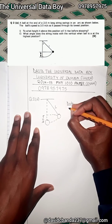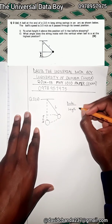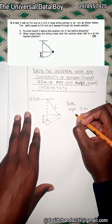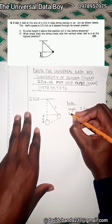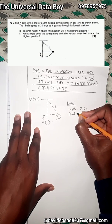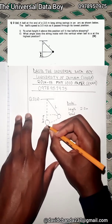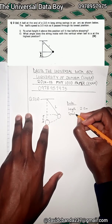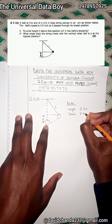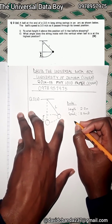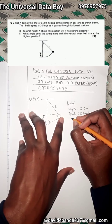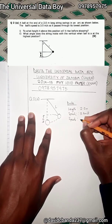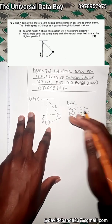In any physics problem, always collect the data. The length is 2.0 meters. The speed we've been given is at the lowest position — this is the initial speed, so the initial speed is 2.5 meters per second. The ball comes to rest at the top, so the final speed is zero meters per second, even though it's not explicitly stated in the question.